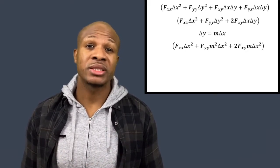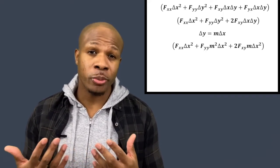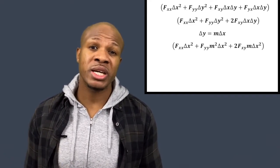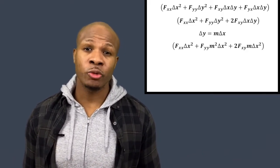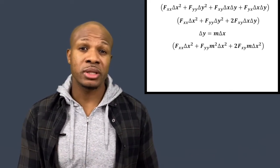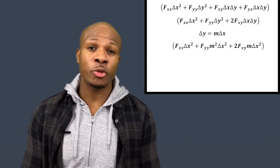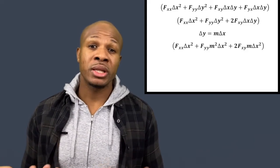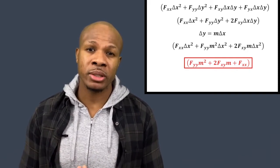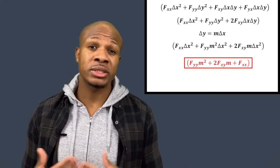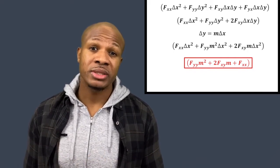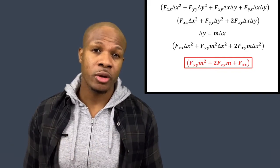After substituting δy = m·δx, the second-order term becomes: f_{xx}·δx² + f_{yy}·m²·δx² + 2·f_{xy}·m·δx². Since δx² is always positive, we can factor it out as a common positive factor. Eliminating δx², we're left with: f_{yy}·m² + 2·f_{xy}·m + f_{xx}. This is exactly what we wanted — a simple quadratic polynomial in the slope m.